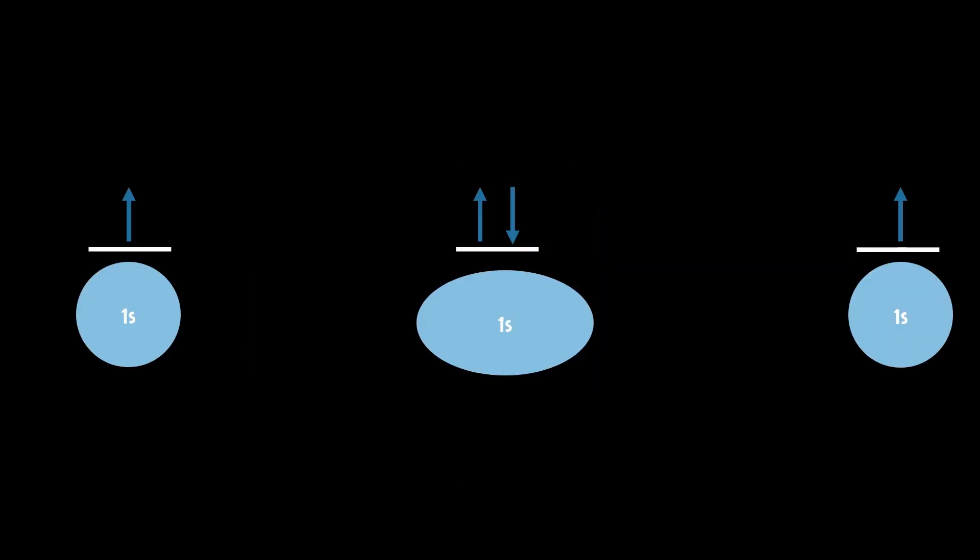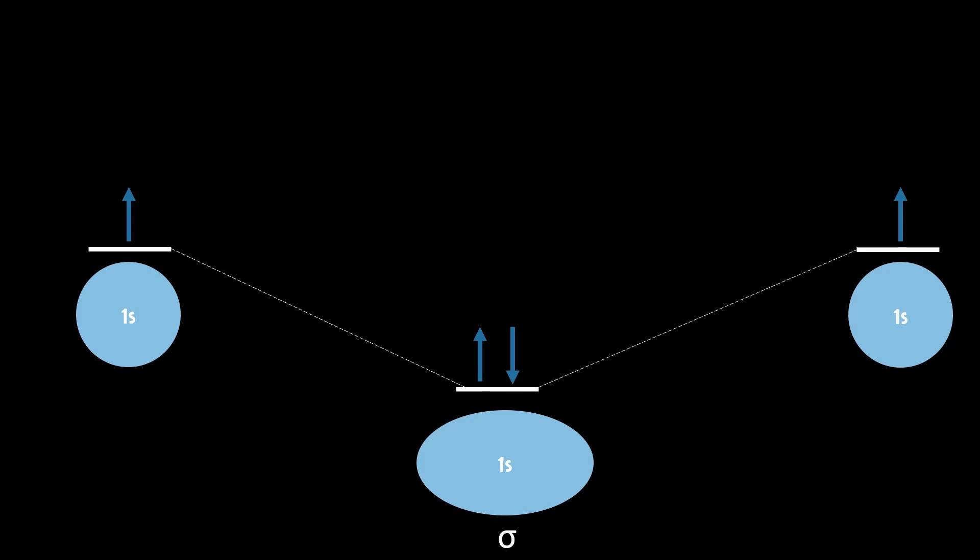So the energy of the sigma bond is actually lower than the energy of the two isolated hydrogen atoms, making this bond energetically favorable.